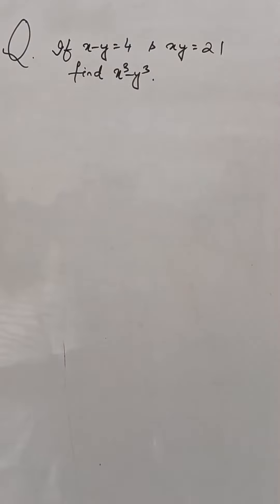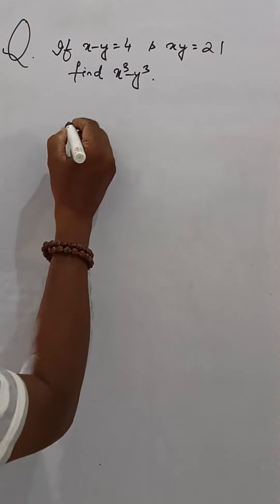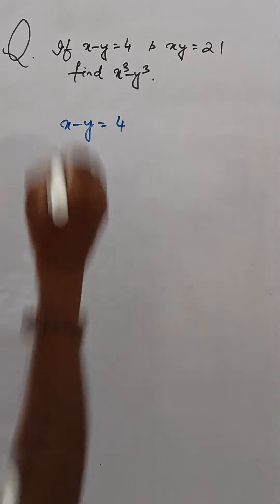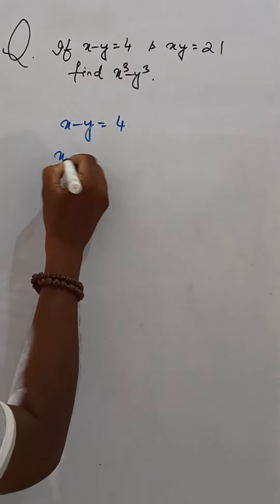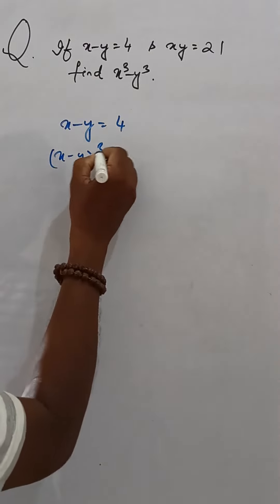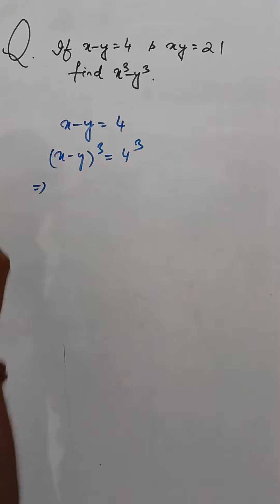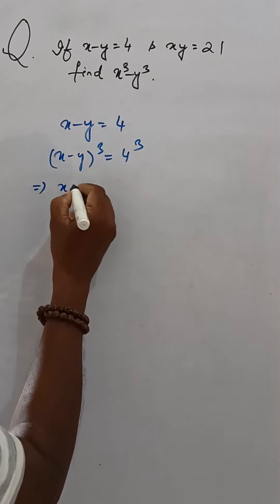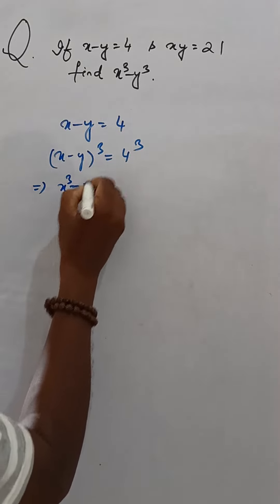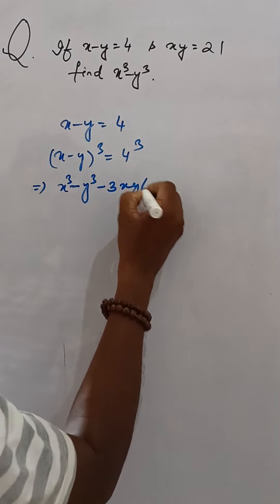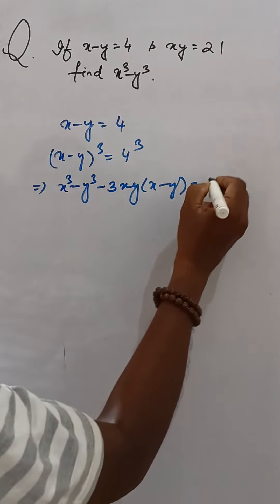x minus y is equal to 4 and x y is equal to 21. Find x cube minus y cube. Here, x minus y is equal to 4. Cubing both sides, that is x minus y whole cube is equal to 4 cube. Then this is x cube minus y cube minus 3xy into x minus y is equal to 64.